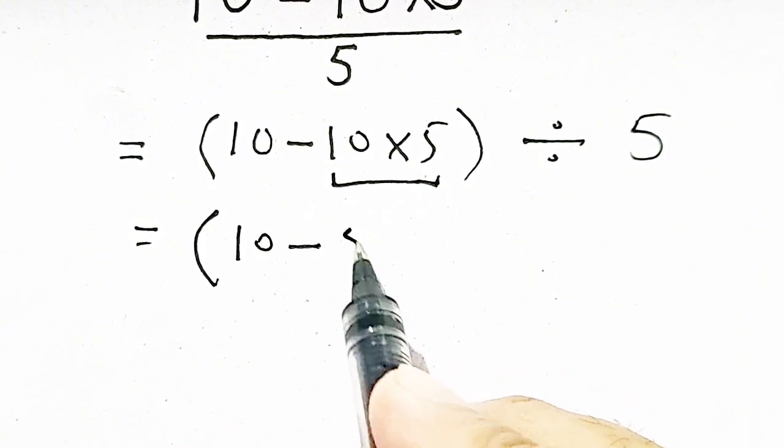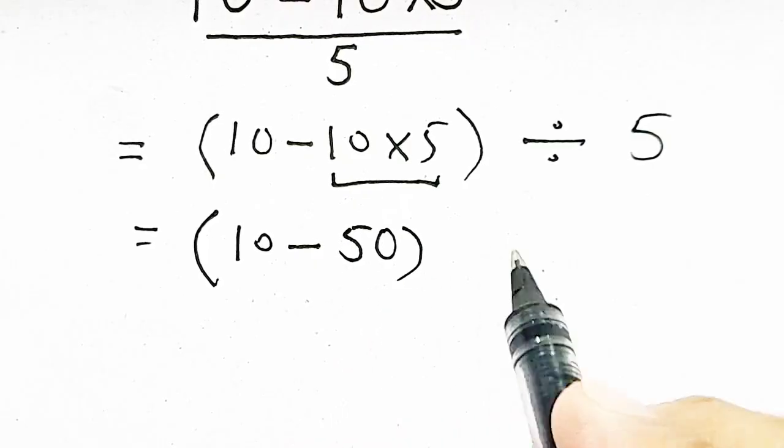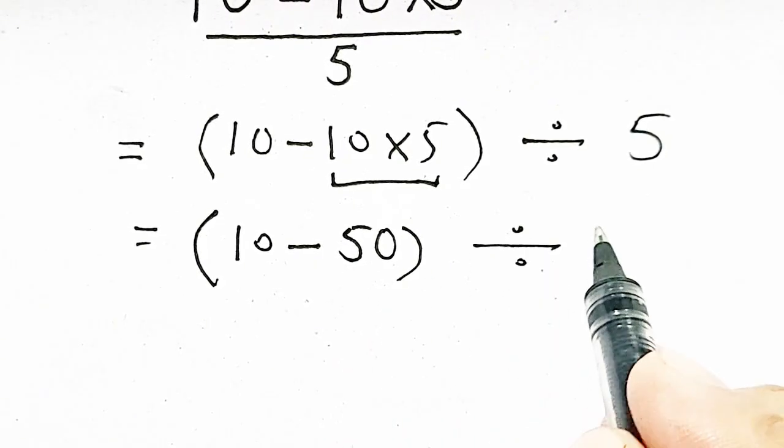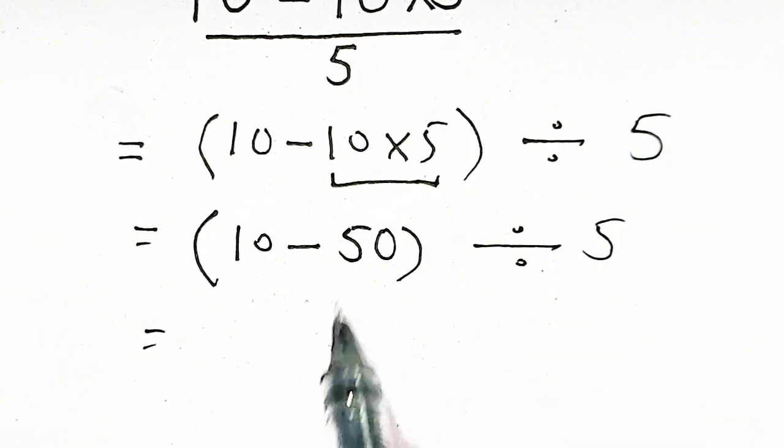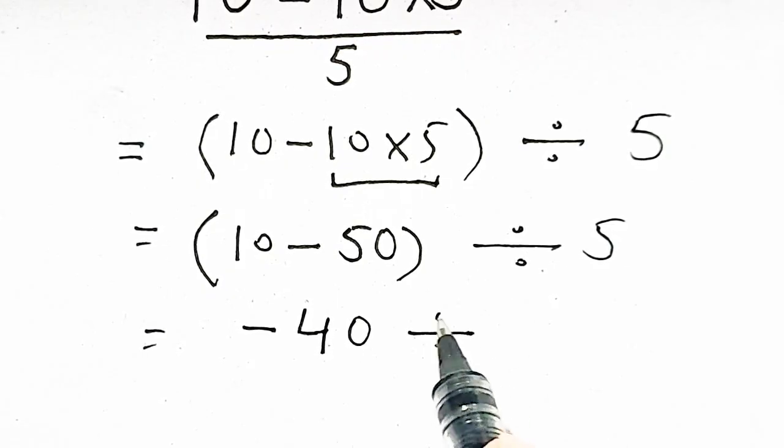10 minus 50 divided by 5. 10 minus 50 will be equal to minus 40 divided by 5.